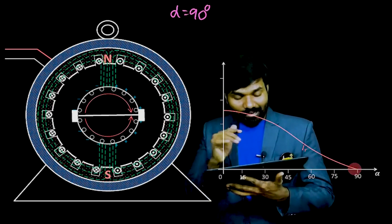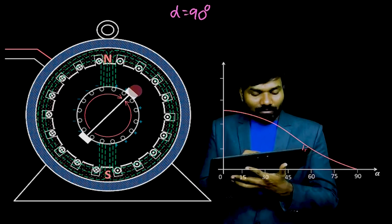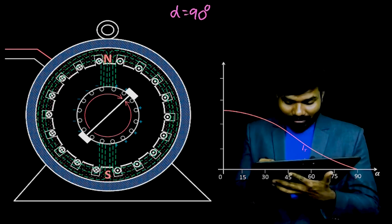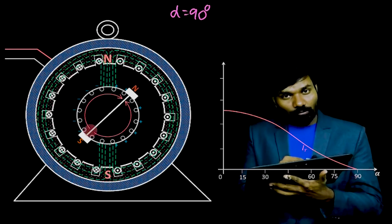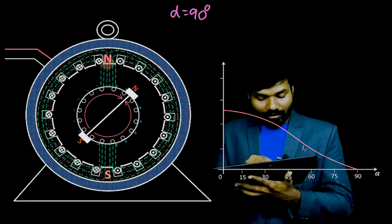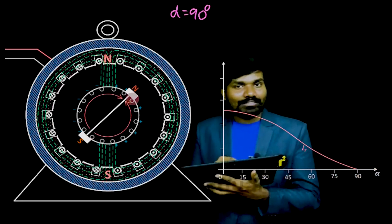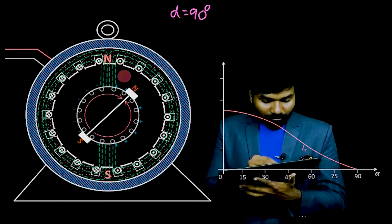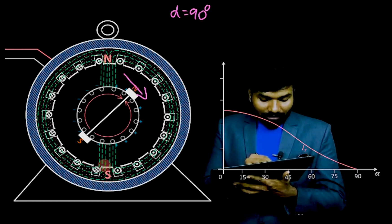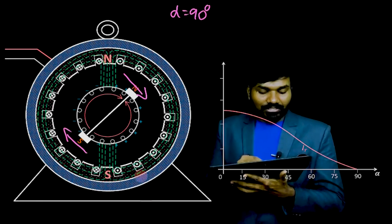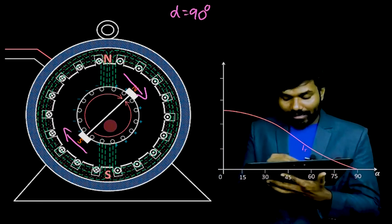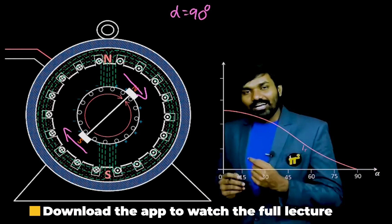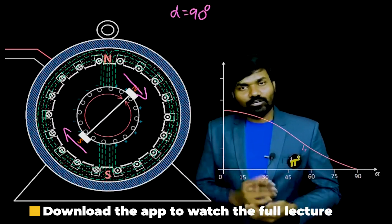Now suppose I place the brush axis at some angle between 0 and 90 degrees — then there will be rotor current, and North and South Poles will be created on the rotor. This North Pole and the stator North Pole will repel each other; similarly the South Poles repel. There will be a net torque and the rotor will continue to rotate in the clockwise direction.